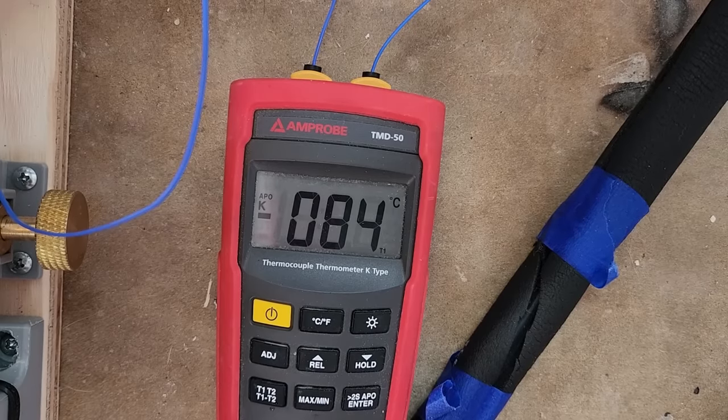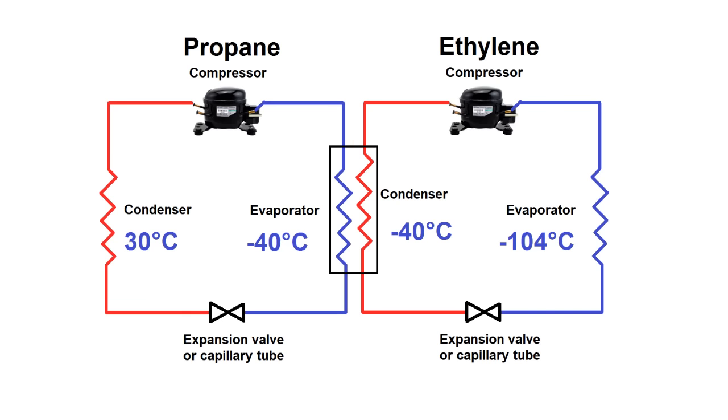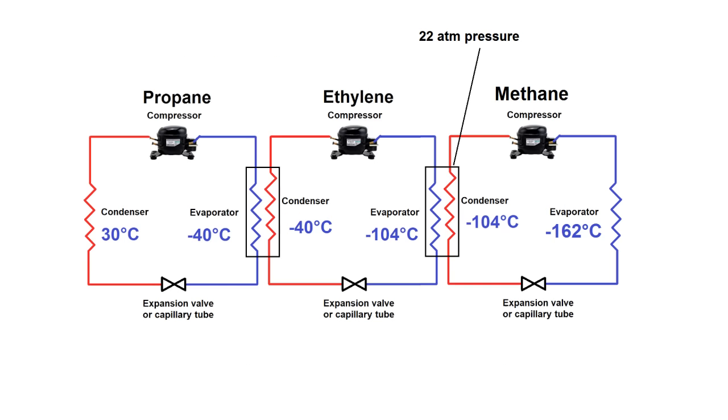At this point, you're probably wondering where do we go from here. Well, theoretically I could build a three-stage device using ethylene in the second stage and methane in the third stage. But if the ethylene evaporator ran at minus 104°C, that would require about 22 atmospheres of pressure for the methane to condense, which would then bring me down to a temperature of minus 162°C if the methane evaporated at one atmosphere. That's a pretty high pressure ratio and a lot of extra complexity.